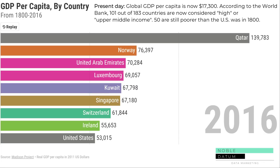This brings us to current times. Global GDP per capita is now $17,300. According to the World Bank, 101 out of 183 countries are now considered high or upper-middle income. But 50 are still poorer than the US was at the beginning of this video, in 1800.